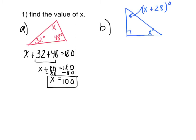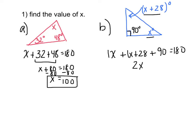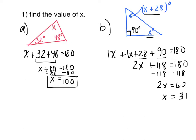Example B — once again, we need to find the value of x. We know that since this is a right angle, this one is going to be 90 degrees. So let's set this up: x plus x plus 28 plus 90 gives me 180 degrees. Combine like terms: 1x plus 1x is 2x, and 28 plus 90 gives me 118, so 2x plus 118 equals 180. This is a two-step equation — subtract 118 on both sides, that gives me 2x equals 62. Divide by 2, and x is 31 degrees.